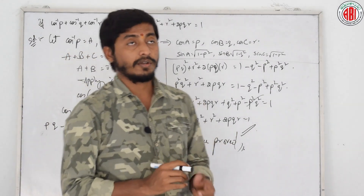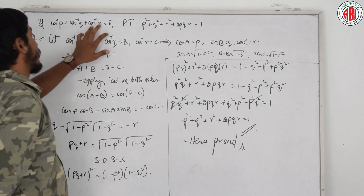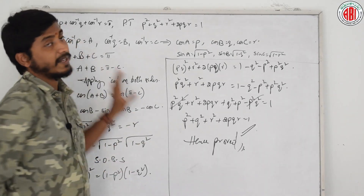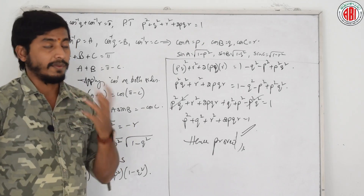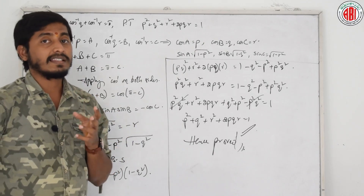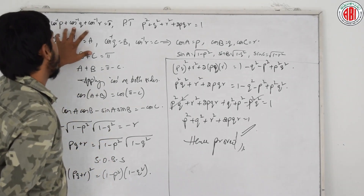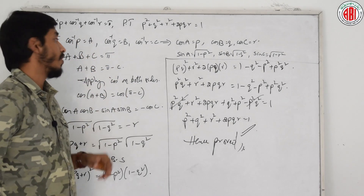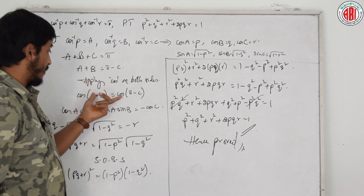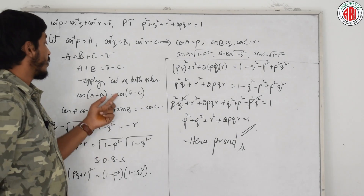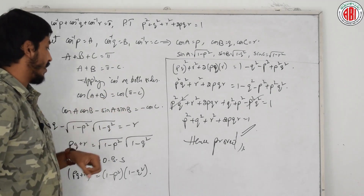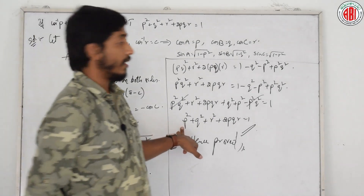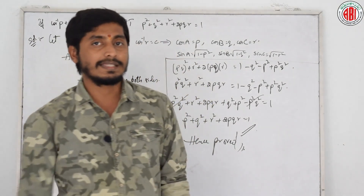Let us look at this problem once again. Given cos inverse p plus cos inverse q plus cos inverse r equals pi, we assumed these as A, B, and C, so A plus B plus C equals pi, and A plus B equals pi minus C. Since everything is in terms of cosine, we applied cos on both sides. Cos of pi minus C is minus cos C, and cos of A plus B is cos A cos B minus sin A sin B. After substitution, squaring both sides, and simplification, we got the required result.